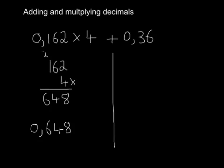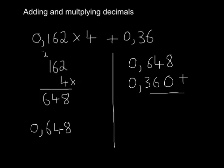And then the second part is relatively straightforward. We just take what we've got, 0.648. To that we're going to add 0.36. Don't forget the 0 that we have to add on.